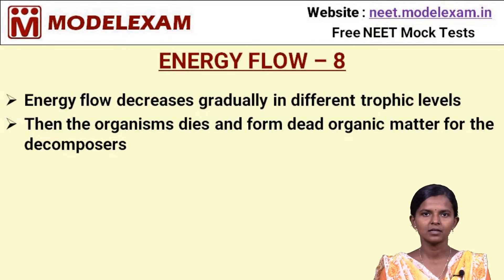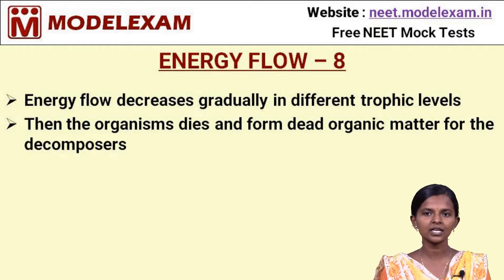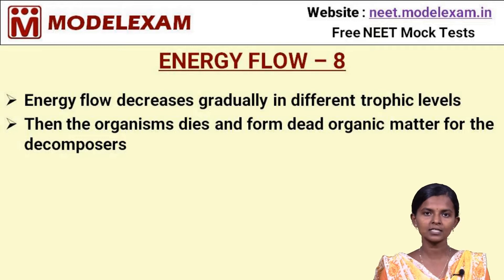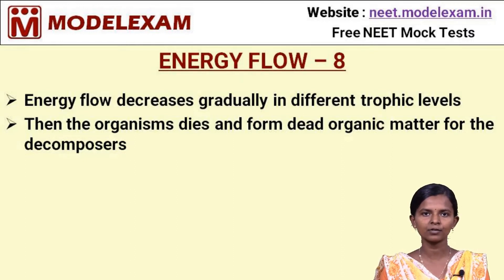Energy flows from producers to consumers, but the amount of energy transferred decreases gradually across different trophic levels until the organism eventually dies. The dead organism becomes dead organic matter, which is converted into inorganic nutrients used by plants in the next cycle. The ecosystem thus follows energy flow in a gradually decreasing manner, and through decomposition, energy is regenerated for the next cycle.